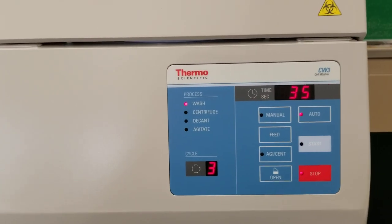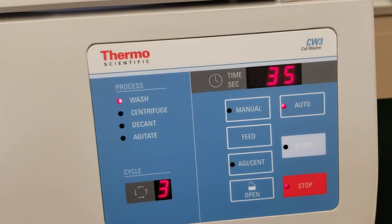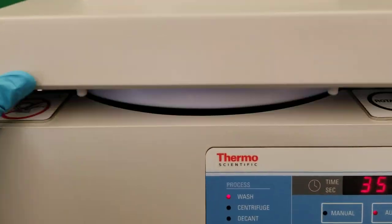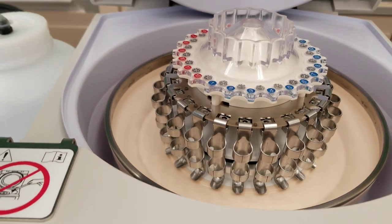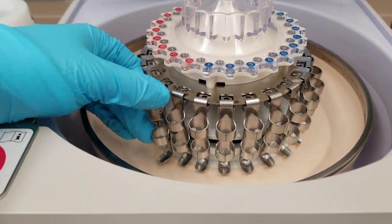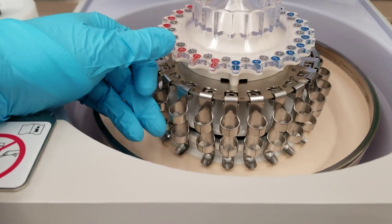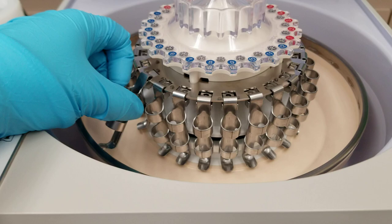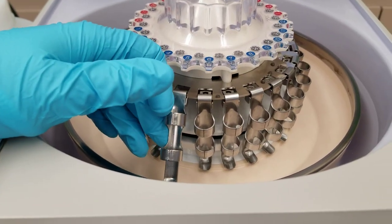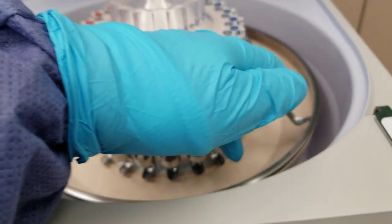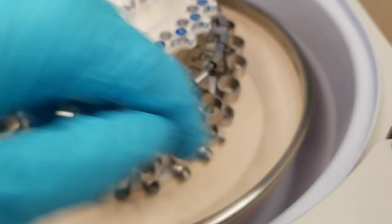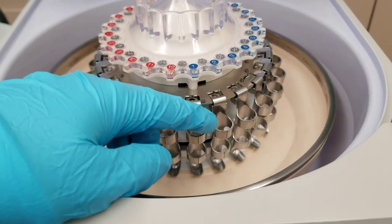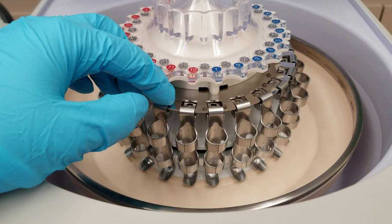So this is the Thermoscientific CW3 cell washer. If you open it up, it pops open like that. You'll see that there are 24 slots for the tubes to go in and they do swing out in this little bucket area to catch anything that comes out of there and also to stop this from going up way too high. So this is a fixed rotor but with a swing location for each of the tubes.